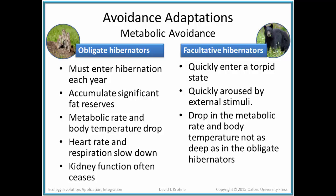On the other hand, we have facultative hibernators. These enter a quick torpor state and then are aroused very quickly by external stimuli such as noises or changes in temperature. They drop their metabolic rate, but the drop in metabolic rate and body temperature is not as deep as in obligate hibernators, so they don't save as much energy. Typically this occurs in animals that would have difficulty coming out the other side of hibernation — for instance, black bears, which really enter more of a deep sleep and can be easily aroused.